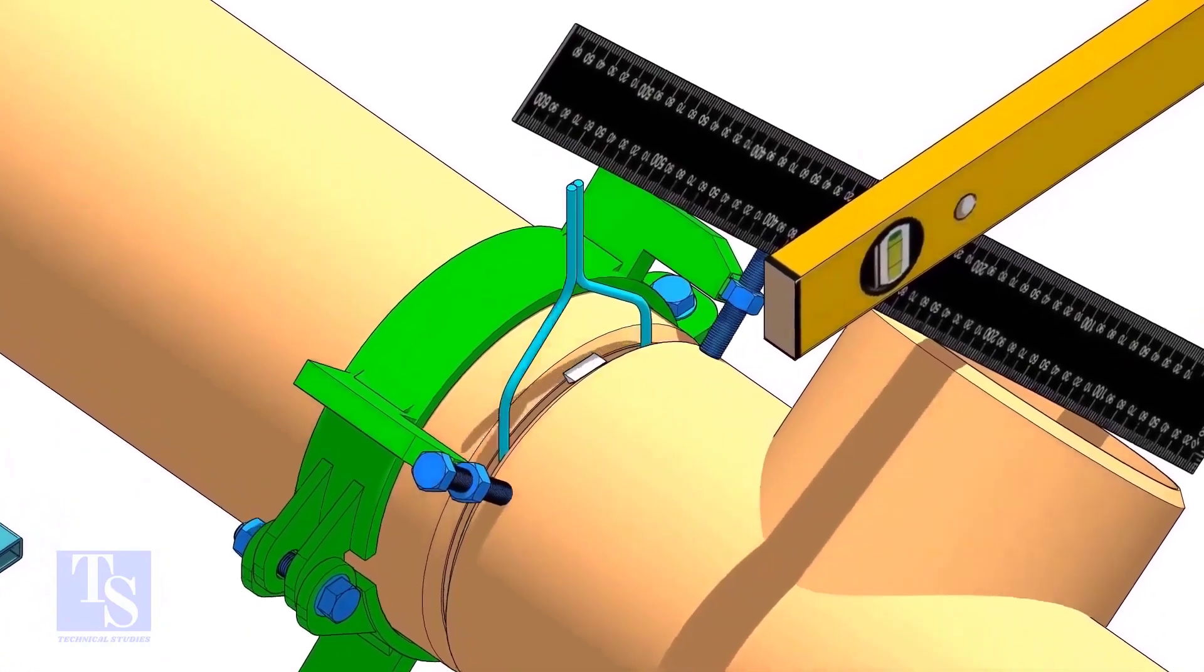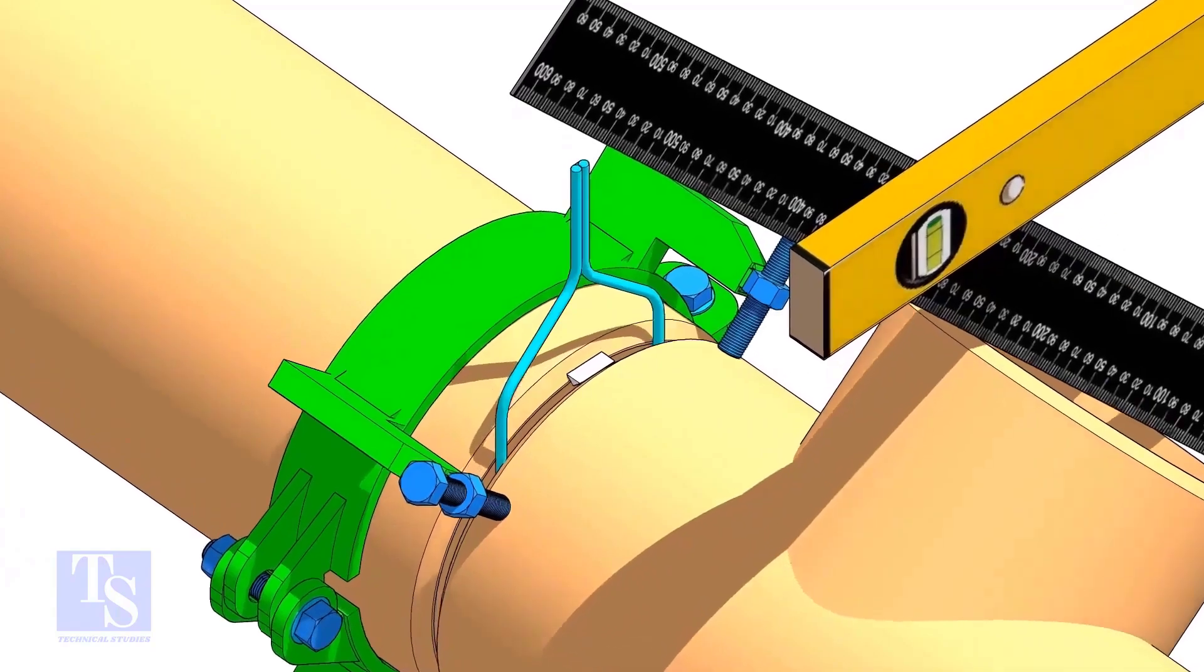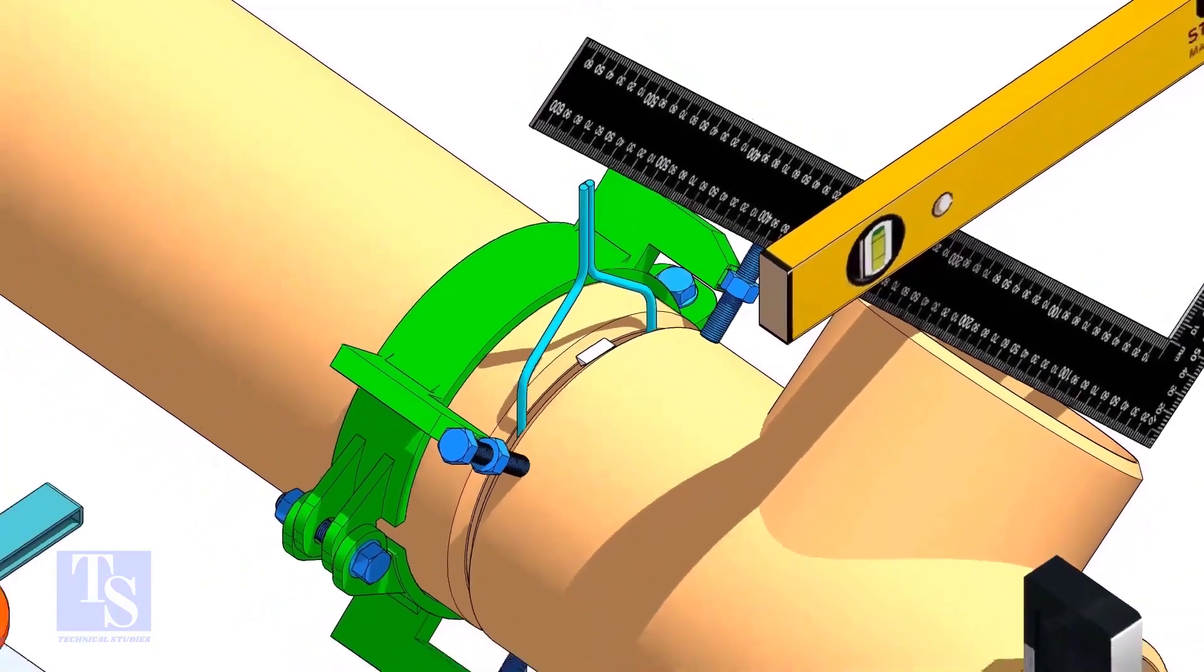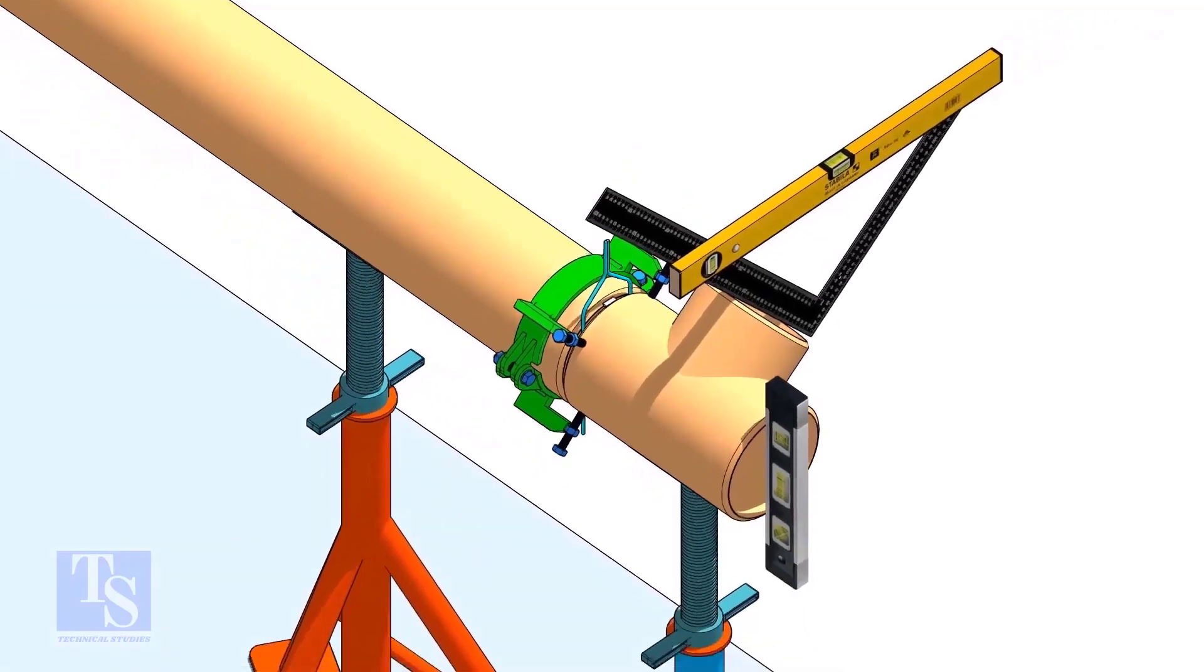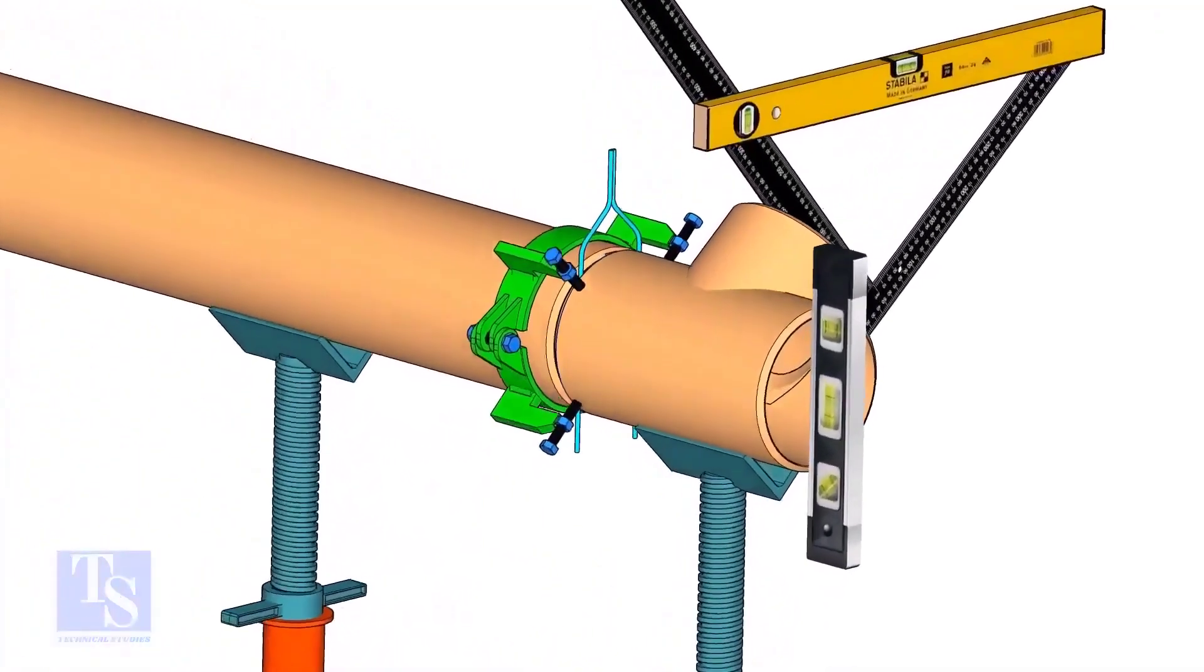TAC weld on the top side of the joint. Check the end level of the T. TAC weld at the bottom side.